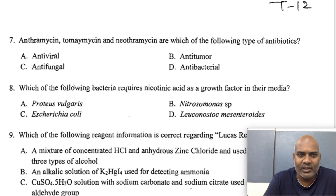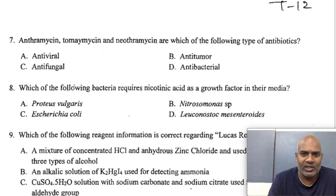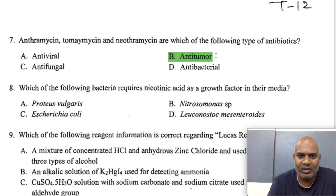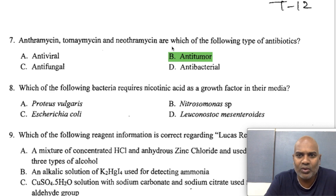Anthramycin, tomaymycin, and neothramycin are which of the following type of antibiotics? The answer is they are anti-tumor agents because they bind to the minor groove of DNA and are involved in DNA alkylation.